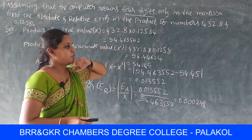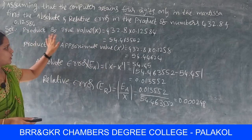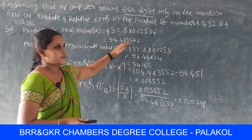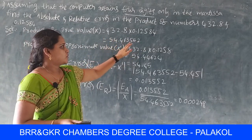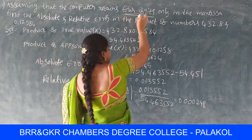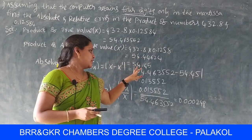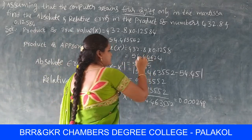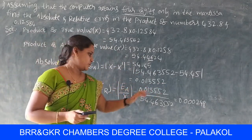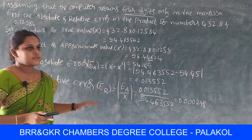To summarize Problem 1: with 4-digit mantissa, the product 432.8 × 0.12584 gives true value 54.463552 and approximate value 54.45. The absolute error is 0.0133552 and the relative error is 0.000248. This problem is complete.